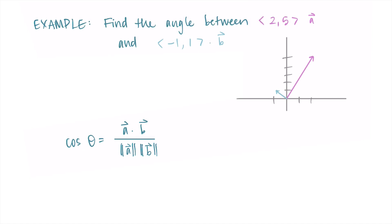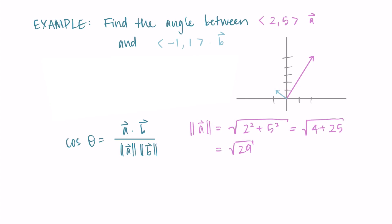We know that cosine of the angle between the vectors is a·b divided by the magnitude of a times the magnitude of b. I like to find the individual components first. For the magnitude of a, I compute the square root of 2 squared plus 5 squared, which is the square root of 4 plus 25, giving the square root of 29. For the magnitude of b, I compute the square root of (-1) squared plus 1 squared, which is the square root of 1 plus 1, giving the square root of 2.